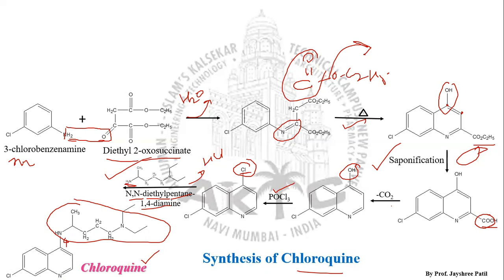In summary, chloroquine synthesis starts with meta-chlorobenzeneamine plus diethyl 2-oxosuccinate. A Schiff condensation occurs with loss of water, giving imine formation. Heating leads to cyclization to form the quinoline. The ester in the quinoline undergoes saponification to give an acid, and decarboxylation removes the CO₂ moiety, giving the 4-hydroxyquinoline structure.